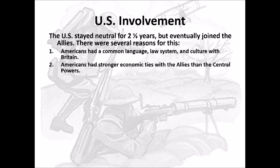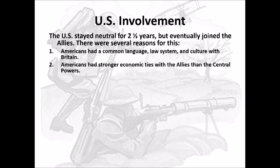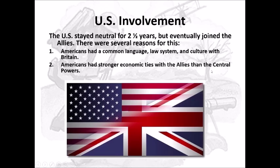First, Americans had a common language, legal system, and culture with Britain — that's where we fought and got our freedom from. So we're a lot alike with those people. Second, Americans had stronger economic ties with the Allies than the Central Powers. Economic means money and trade, so we did more business with them because they spoke our language and shared common laws. You can see our two flags — both red, white, and blue, stars and stripes — a lot in common with Great Britain right there.